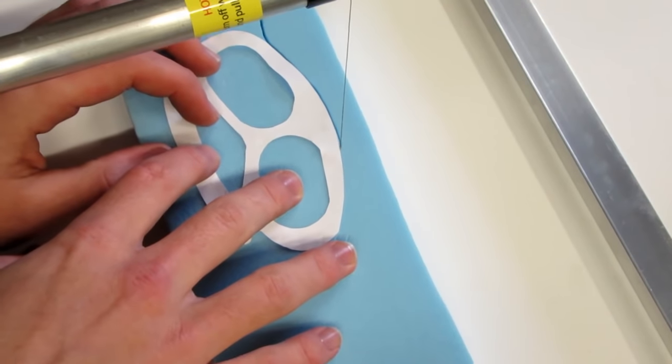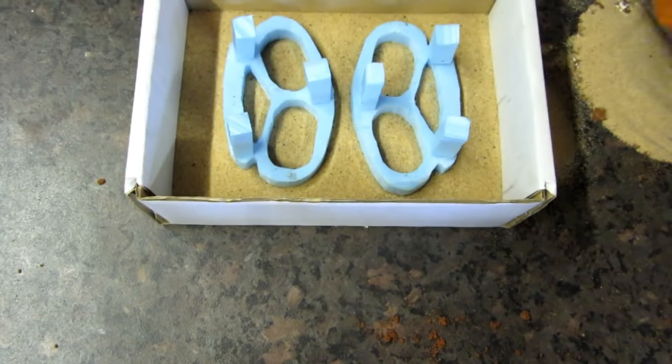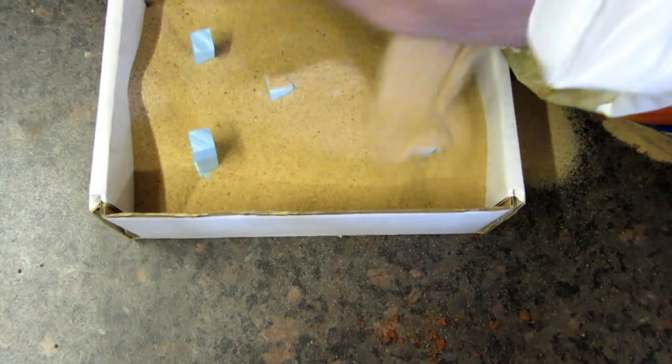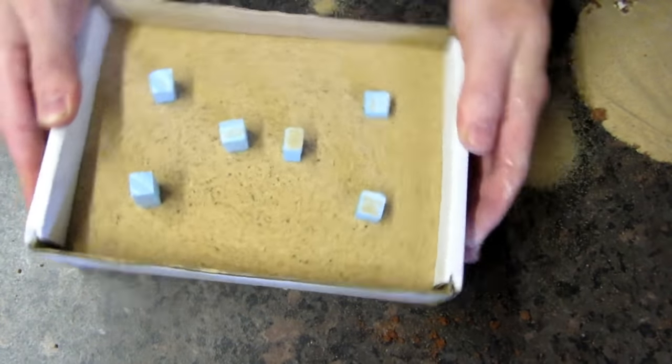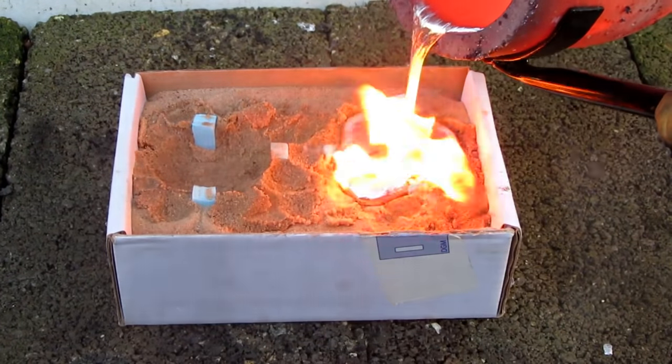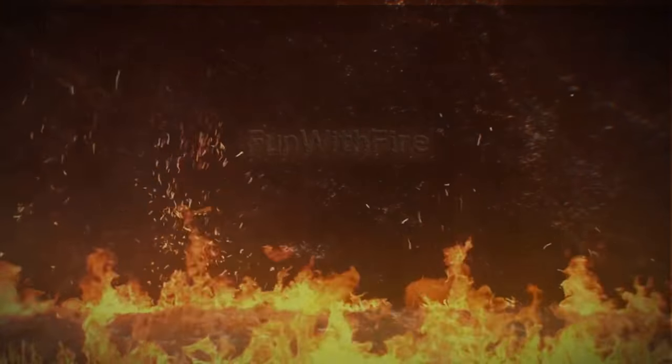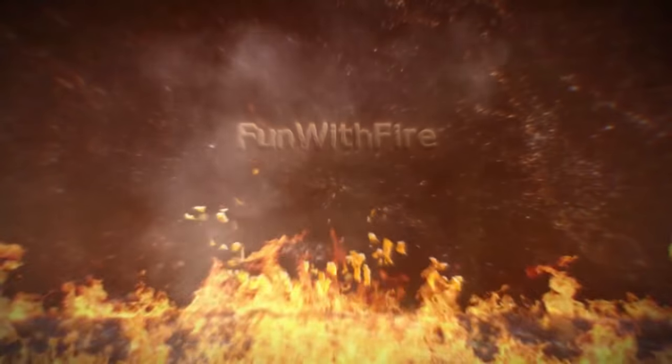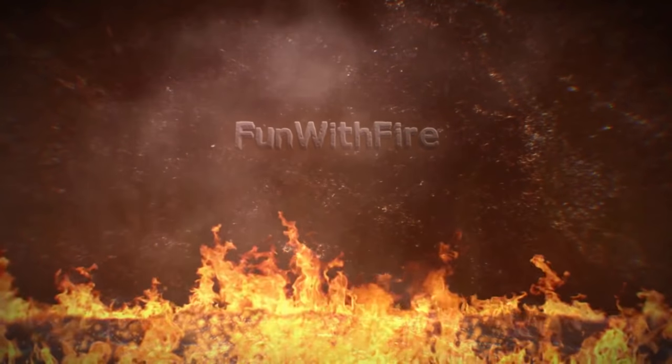What's up guys and welcome back to another video where I'm going to show you the process I undertook to make a pair of aluminum cast knuckle dusters using the lost foam method. I'll show you how I cut and prepared the foam before casting molten aluminum to take its place.